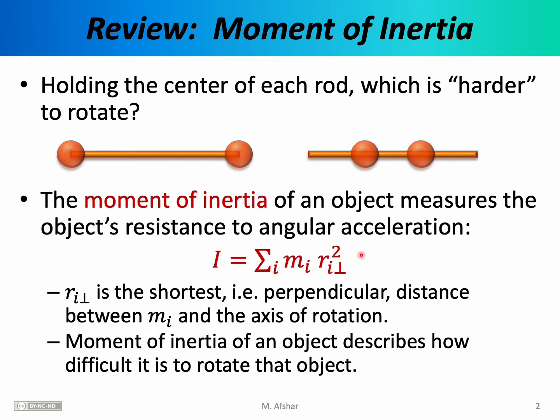Therefore, how you rotate the object — in other words, your choice of the axis of rotation — will determine the precise value of the moment of inertia.